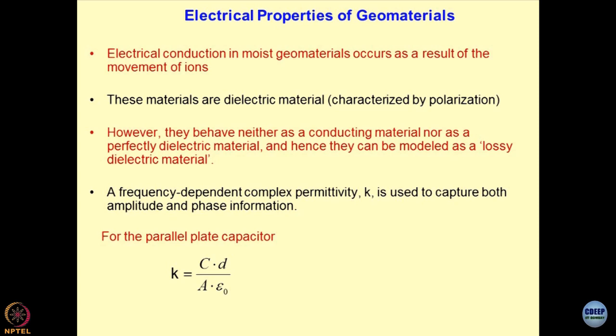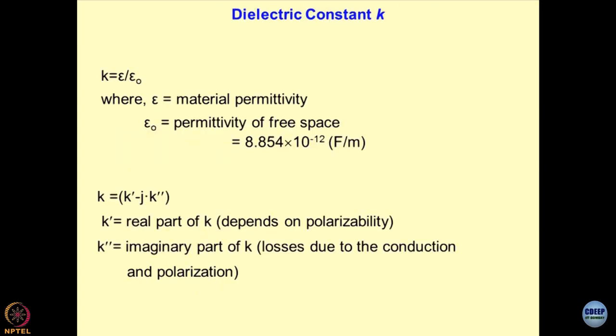That means there are some losses and storage of charges takes place for the soils. The dielectric constant or permittivity is a function of frequency. We define k as (C · d) / (A · ε₀), and capacitance is k · A · ε₀ / d. The dielectric constant is ε / ε₀ — this is the material permittivity. ε₀ is the permittivity of free space.